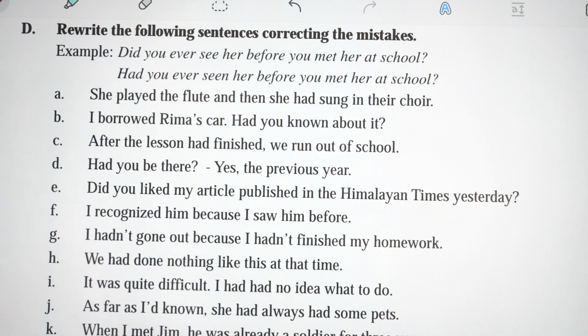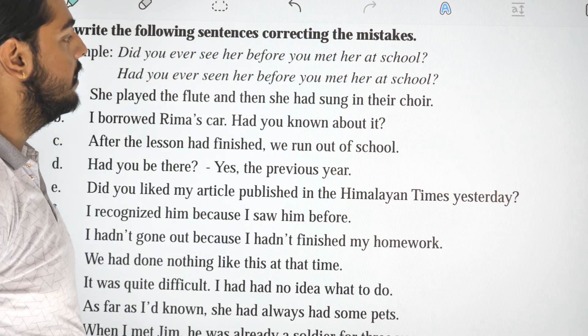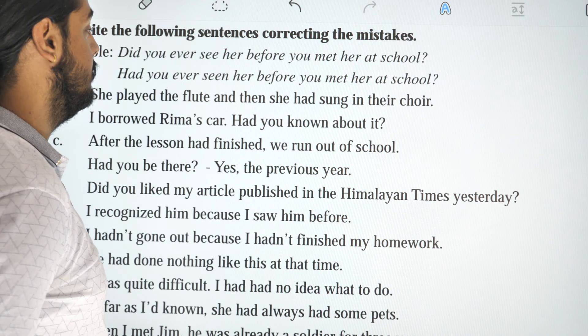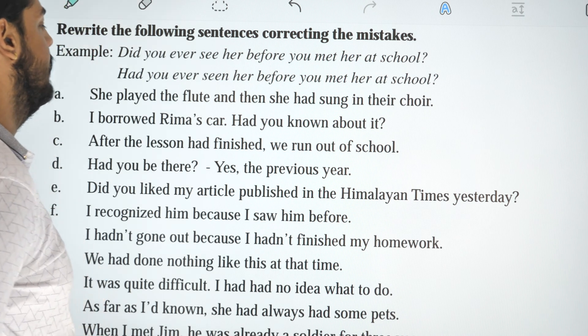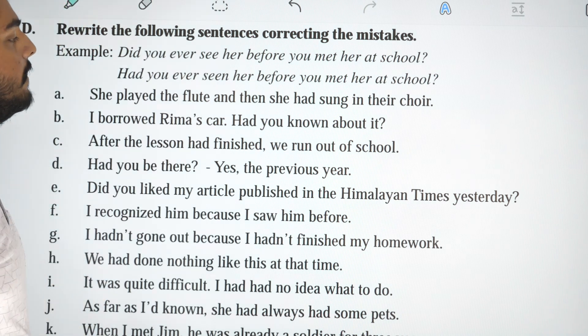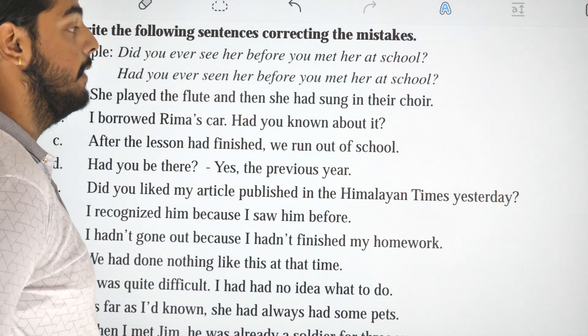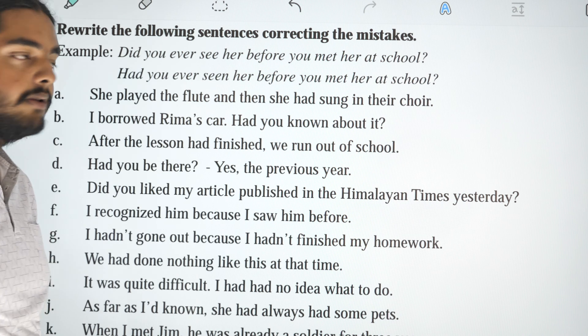Read the following sentences and correct the mistakes. One: 'Did you ever see her before you met her at school?' — The correction is: 'Had you ever seen her before you met her at school?' — using past perfect.